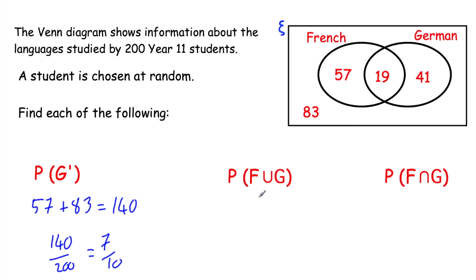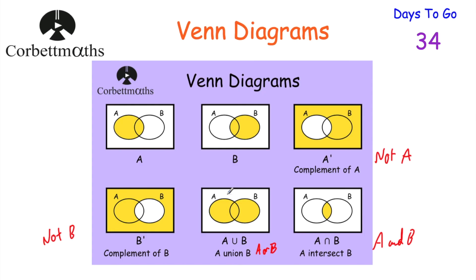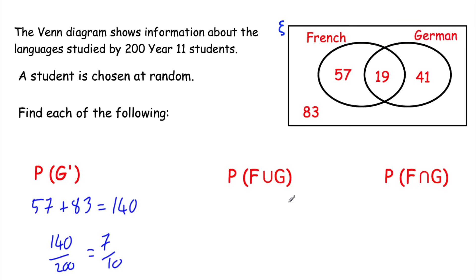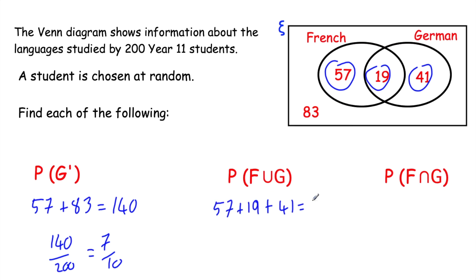For P(F∪G) — F union G means French or German or both. That includes all three regions: only French (57), both (19), and only German (41). Adding those: 57 plus 19 plus 41 equals 117. The probability is 117/200.